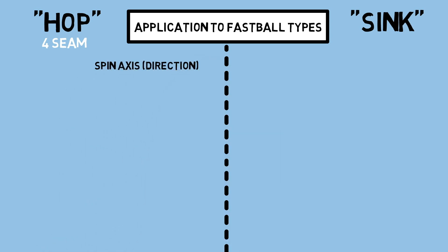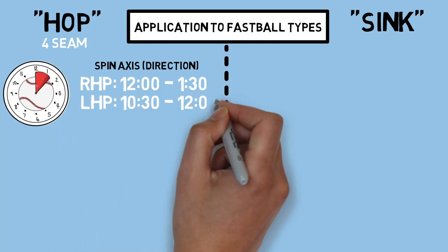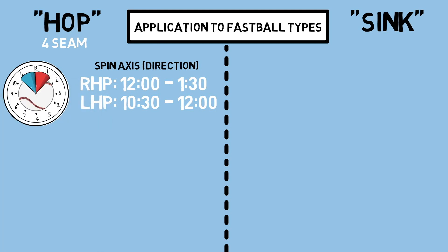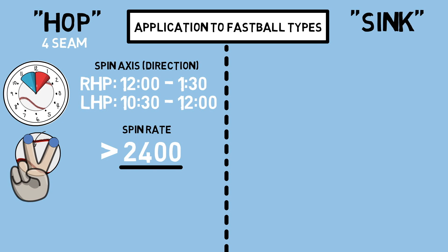First, we will cover fastballs with hop. These are typically four-seam fastballs. If we were to group this pitch by its spin axis, we would typically see it fall in the 12 to 1:30 range for righties and the 10:30 to 12 o'clock range for lefties. Spin rate is where this pitch typically separates itself from the rest — if 2400 is the average MLB spin rate, pitches with hop will rise above that range. The higher the spin, the more hop you'll see. One of the reasons for a higher spin rate on this pitch compared to sinkers is that they're typically thrown with finger pressure on the seams, which allows the pitcher to rip down through the seams, and the seam orientation allows for less drop vertically. This is a short summary of a somewhat complex subject, so if you'd like to hear more about this, let me know in the comments.